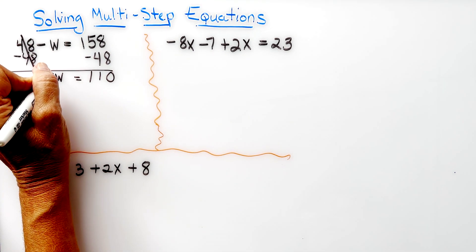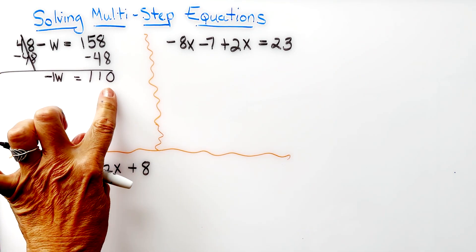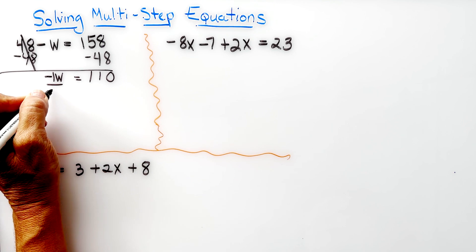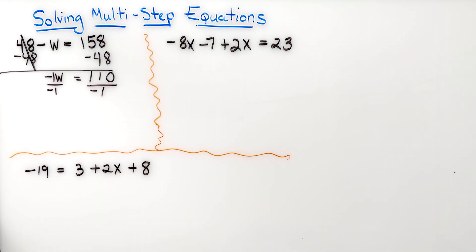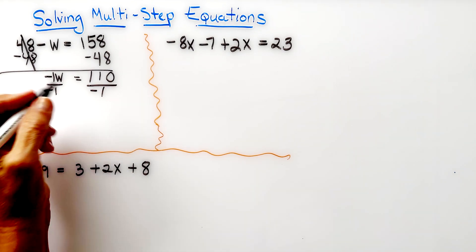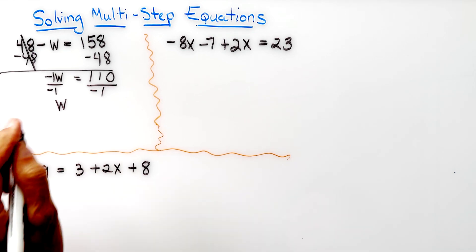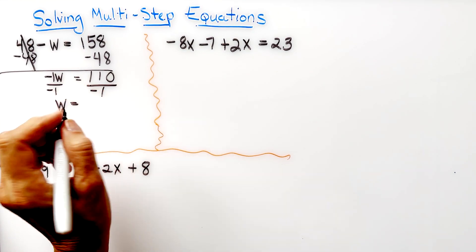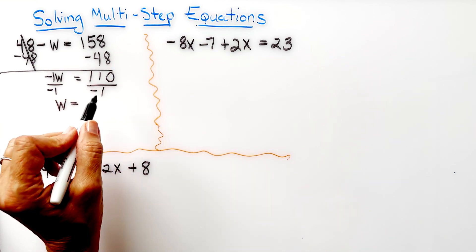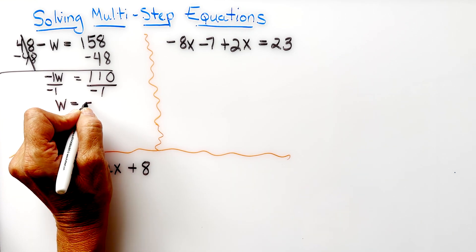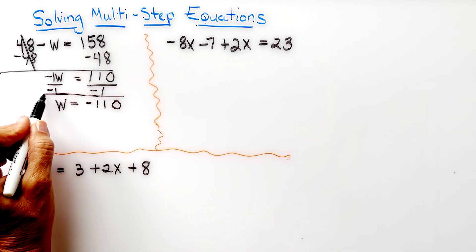We're going to divide each side of the equation by negative one because we cannot have a negative variable. So the answer is w equals positive, and 110 divided by negative one is negative 110. There is our answer.